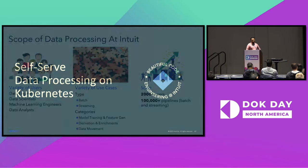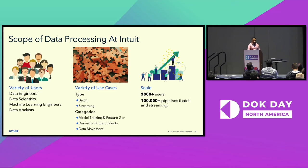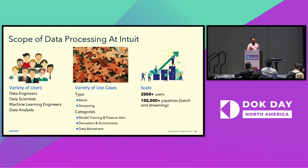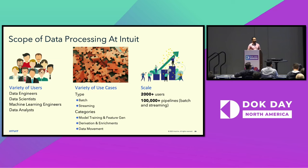In this section, I want to talk about the scope of data processing at Intuit. We have a variety of users: data engineers who write complex ETL jobs, data scientists and ML engineers who write pipelines to generate features or train AI models, and data analysts who build pipelines to power business dashboards. At scale, we have more than 2,000 data consumers or producers at Intuit across these roles, and more than 100K pipelines that process data from various domains.